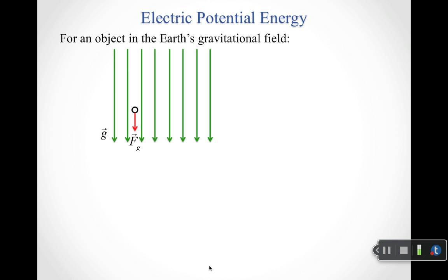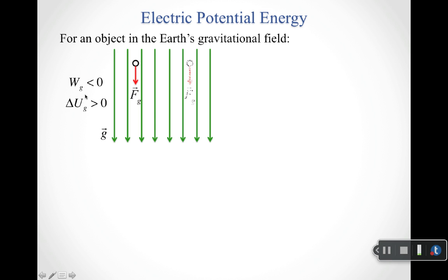Let's come back to the gravitational field. With an object in Earth's gravitational field, the gravitational force pulls it downward. If the object moves up, the work done by gravity is negative — it's trying to pull down but displacement points opposite. This means the object did the opposite of what gravity wanted, so gravitational potential energy increases. If the object falls, it does exactly what gravity wants, gravity does positive work, and gravitational potential energy decreases.